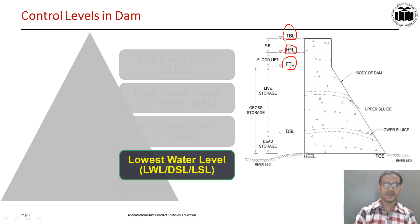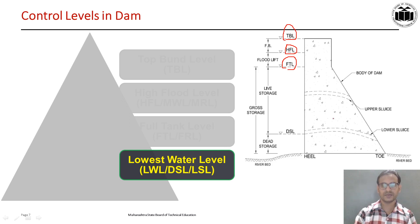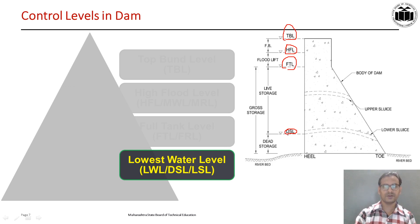Another level is LWL, TSL, or LSL — lowest water level, dead storage level, or lowest sill level. It is the lowest reduced level of the water surface in the reservoir. If water goes below the lowest water level, then water cannot be drawn out of the reservoir. Here you can see the DSL of the reservoir. This is all about the control levels in the dam.